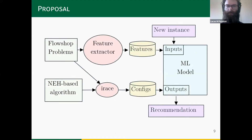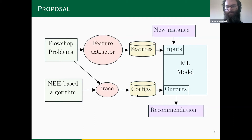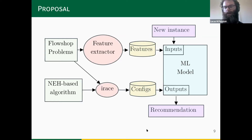Our proposed methodology can be summarized as follows: we have a problem space composed of flow shop problems and an algorithm design space based on the NEH heuristic. With those two sources of information we use irace to find good configurations for every instance. We also extract features about those instances, and with these two datasets of features and configurations we train machine learning models to find the best configuration for new, unseen instances.